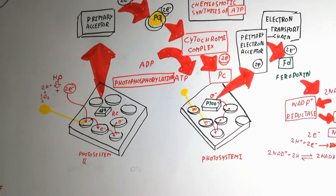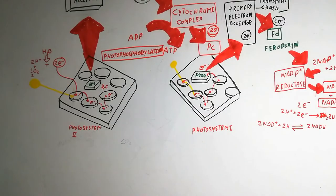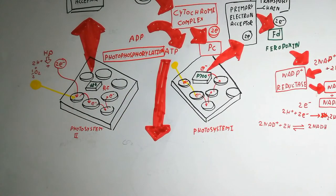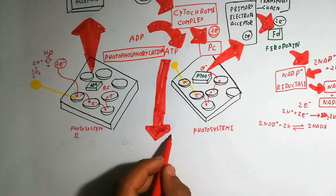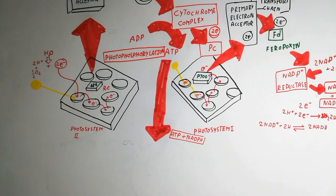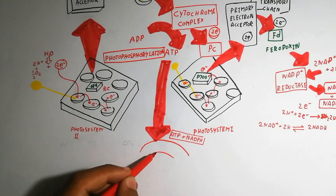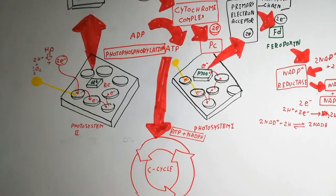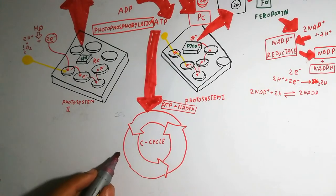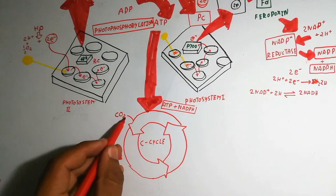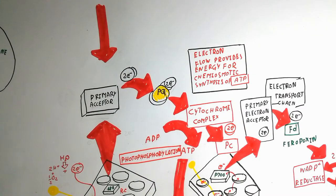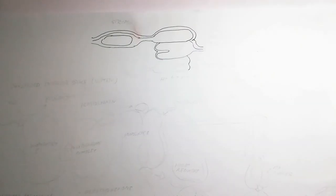This overall pathway is known as the Z-scheme model because its shape resembles the letter Z. The ATP and NADPH produced are now ready to enter the Calvin cycle, which is the dark reaction. It is called the dark reaction because it does not directly depend on light. The cycle begins by adding carbon dioxide as input; glucose, fatty acids, and amino acids are the outputs.